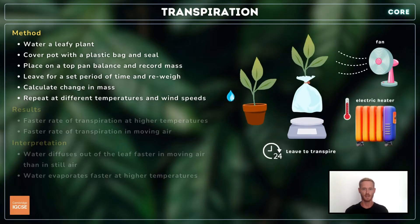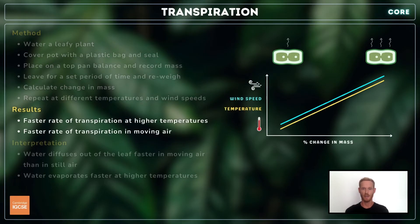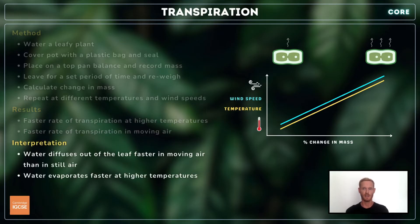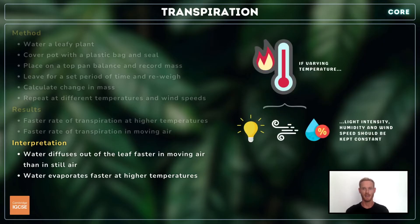You can then repeat the process by exposing the plant to different temperatures and wind speeds, which could be achieved by using a heater or air conditioning unit and an electric fan. We would expect the rate of transpiration to increase as wind speed and temperature increase, because water diffuses out of the leaf faster in moving air than in still air, and evaporates faster from the surfaces of the mesophyll cells at higher temperatures. When investigating the effects of a variable like temperature, others like light intensity, wind speed and humidity are kept as constant as possible.